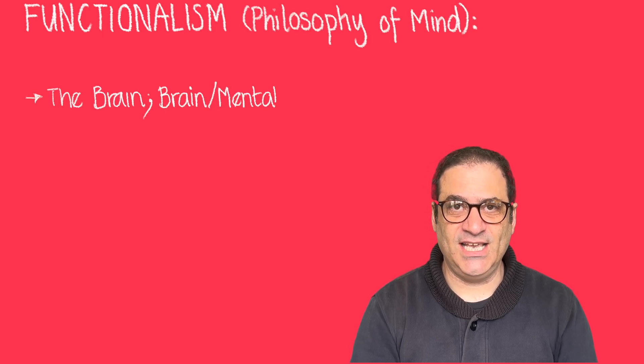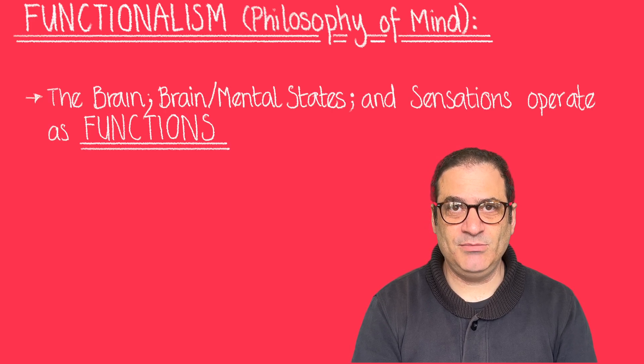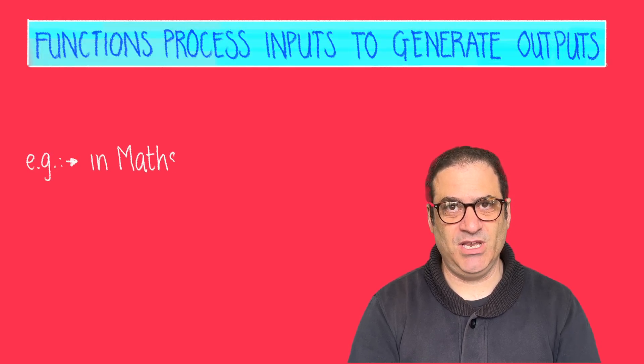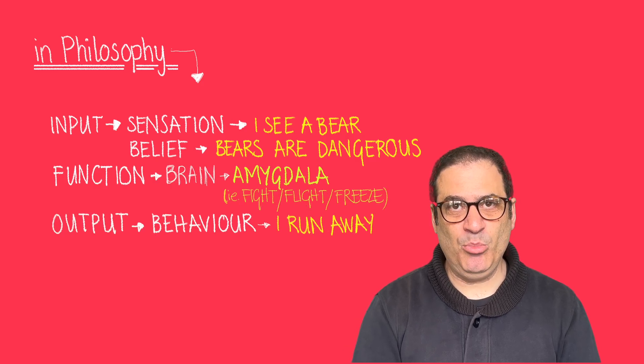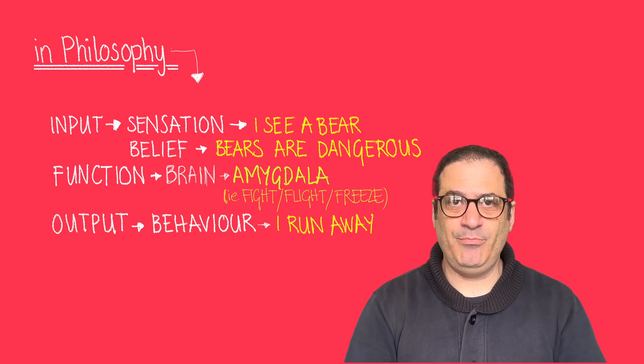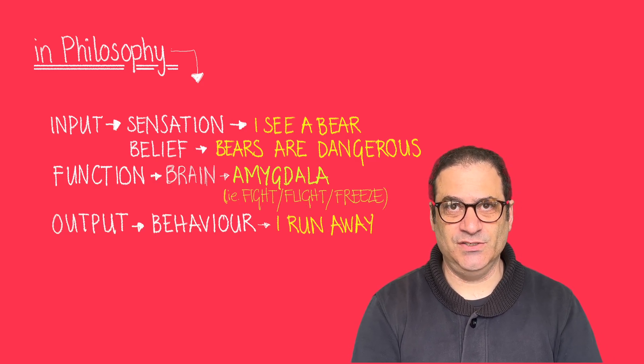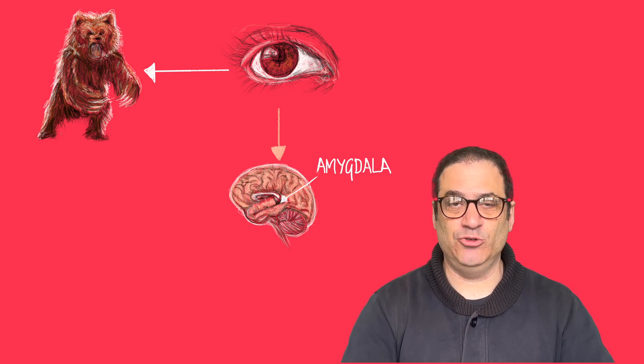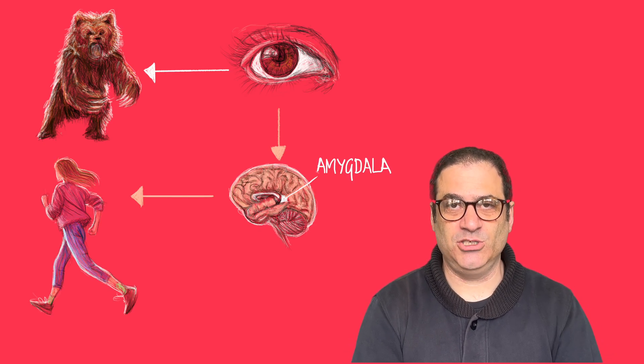The functionalist theory of mind effectively says that a mental state can be described as a function. Functions have inputs — for example, sensory experiences — and they process outputs, like beliefs and actions. In the last video we talked about how if you saw an animal, for example a bear coming towards you, that would be the input, the sensory experience of the bear, and the output would be behavior and the belief that a bear is coming towards you and that you should run away.